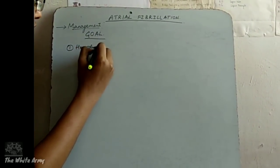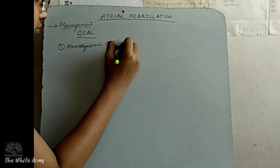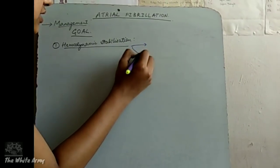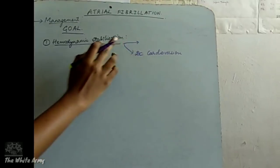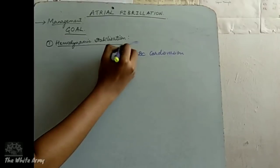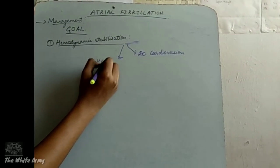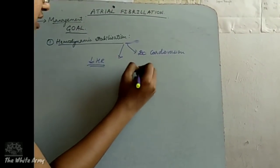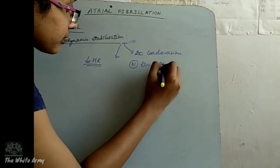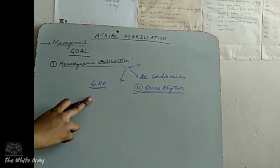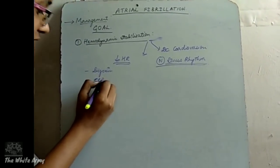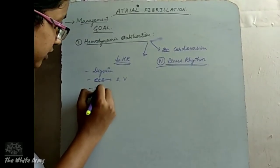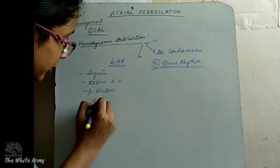For hemodynamic stabilization, depending on severity: if the patient is unstable, you should go with DC cardioversion. If it is a stable case, first reduce the ventricular rate, then achieve normal sinus rhythm. To reduce the ventricular rate, give drugs like digoxin, calcium channel blockers such as diltiazem or verapamil, beta blockers like propranolol, or amiodarone.